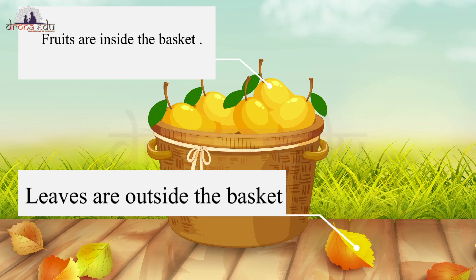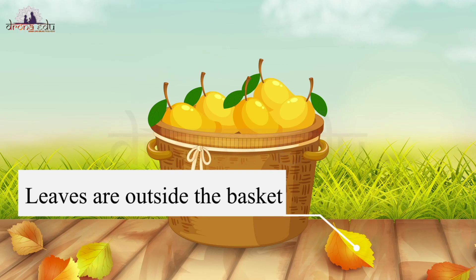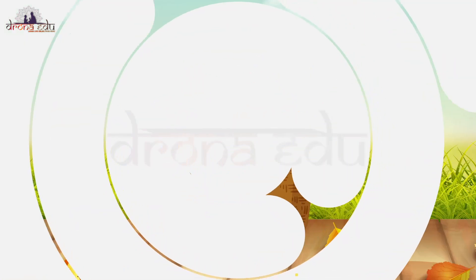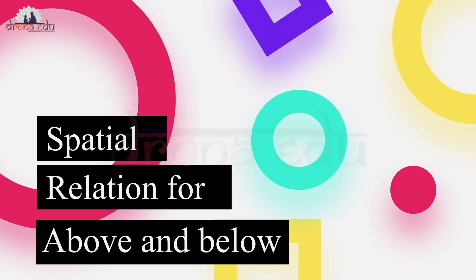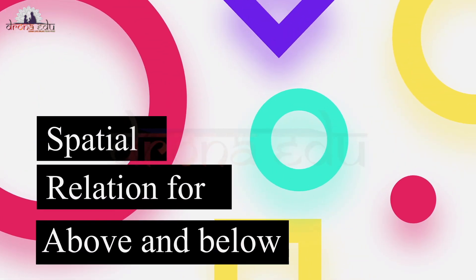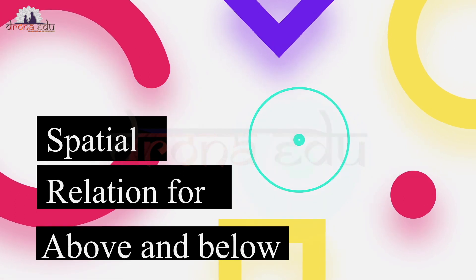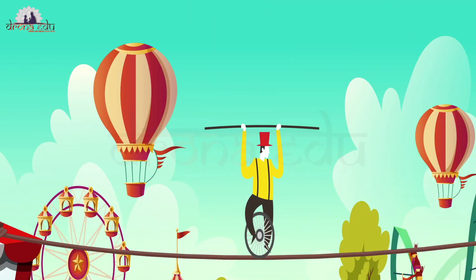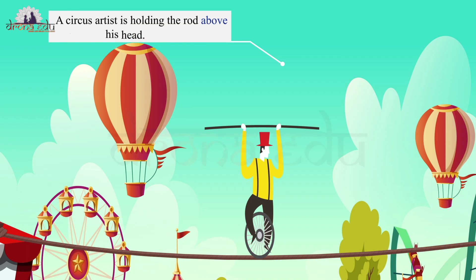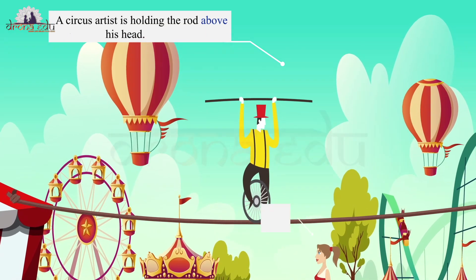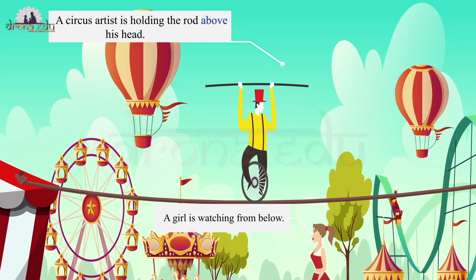Similarly, let's see the spatial relation for above and below. Look at this picture — you can see that the circus artist is holding the rod above, whereas a girl is watching from below.